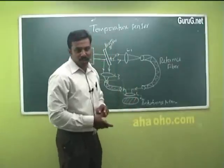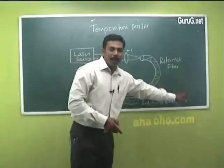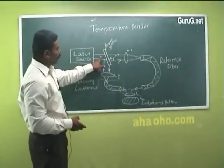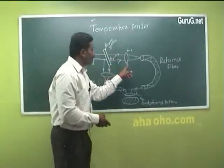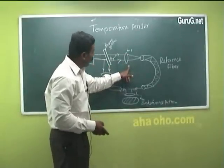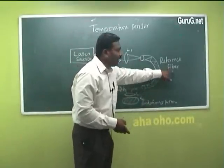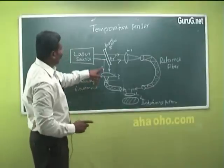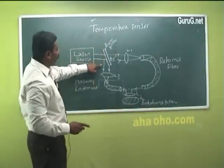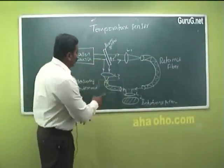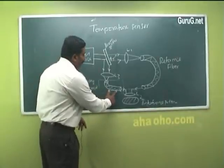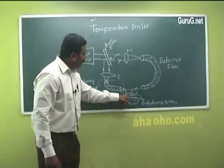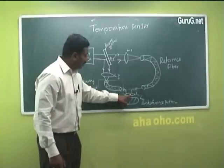The reference optical fiber is isolated and kept away from the measuring environment. After passing through the beam splitter, a part of the beam is transmitted through lens L1 to the reference fiber and reaches lens L2. Similarly, another part of the beam passes through lens L3, through the measurable optical fiber, and also reaches lens L2.